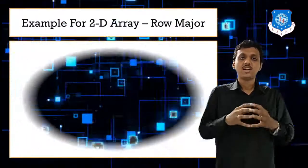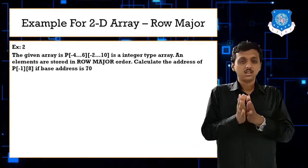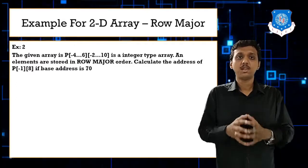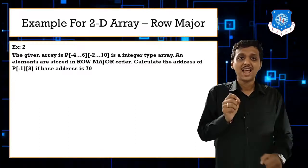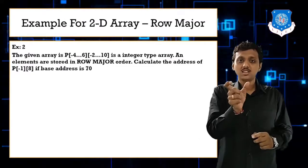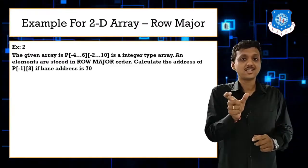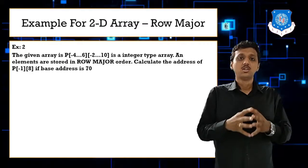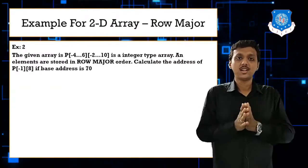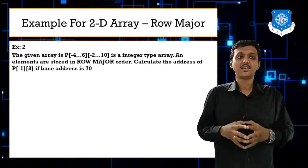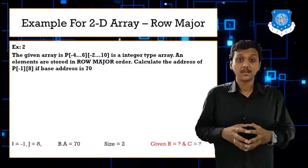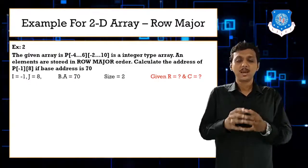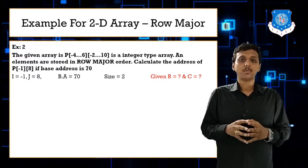The next row major example is a bit tricky. The given array is P[-4..6][-2..10], meaning the row index ranges from -4 to 6 and the column index ranges from -2 to 10. We need to find the address of P[-1][8]. Base address is 70 and the array is of integer type. So i = -1, j = 8, base address = 70, size = 2.